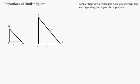First, we must start with the definition for similar figures. Similar figures have all corresponding angles congruent and corresponding line segments proportional.